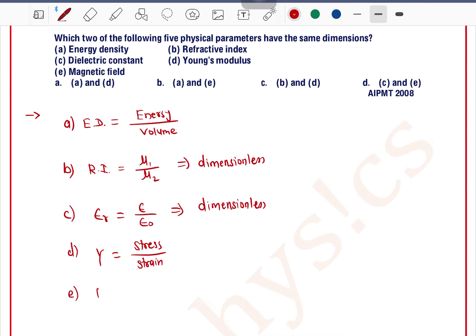For the dimension of B, we can use this formula: F equals I B L, so B equals F divided by I L. Again, B has some kind of dimension.